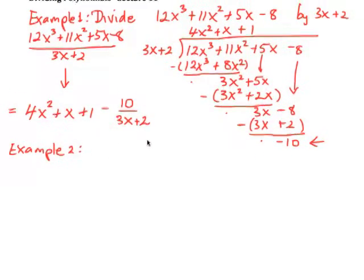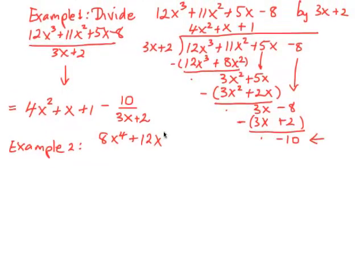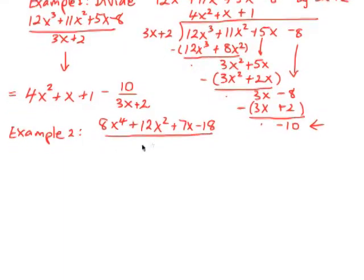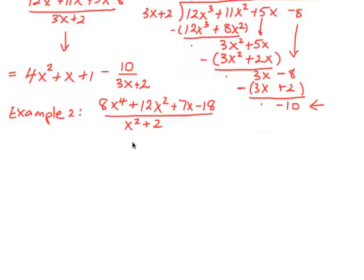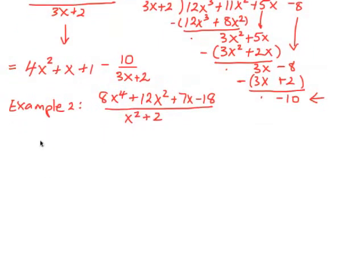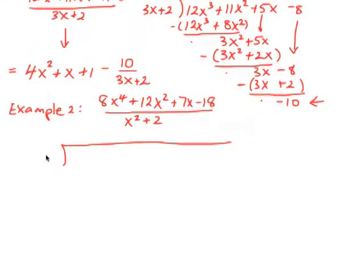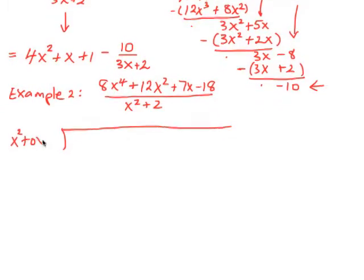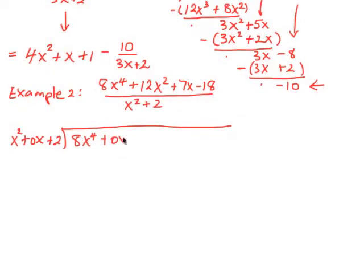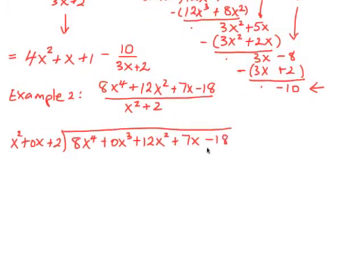Suppose we want to divide 8x to the 4 plus 12x squared plus 7x minus 18 and we want to divide that by x squared plus 2. Now, we've got a couple of complications here. One is that we don't have an x term here. And up here, we don't have an x cubed term. So this is what we do. We do the regular division, but remember, we're talking about place value here, like we do with numbers. So we'll be dividing by x squared plus 0x plus 2. And up here, we're dividing this into 8x to the 4 plus 0x cubed plus 12x squared plus 7x subtract 18.